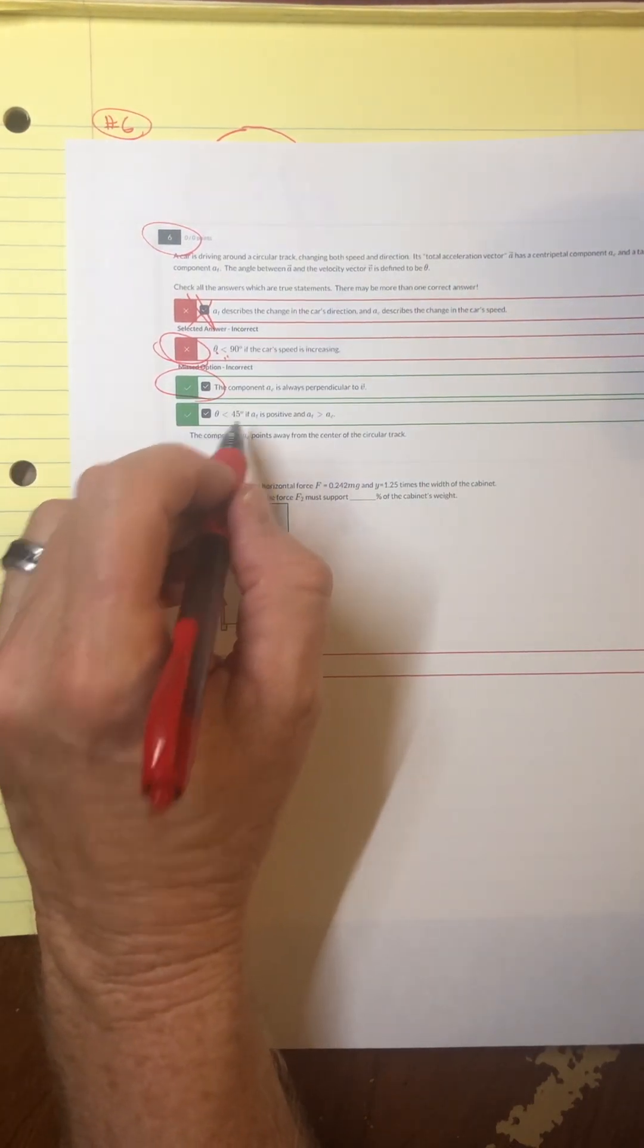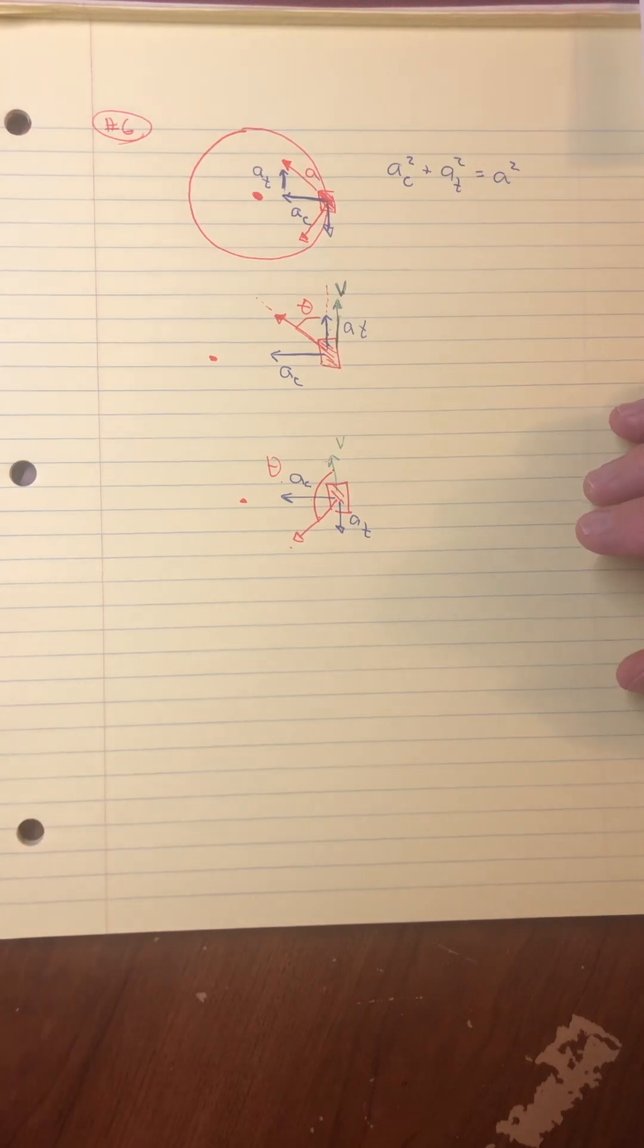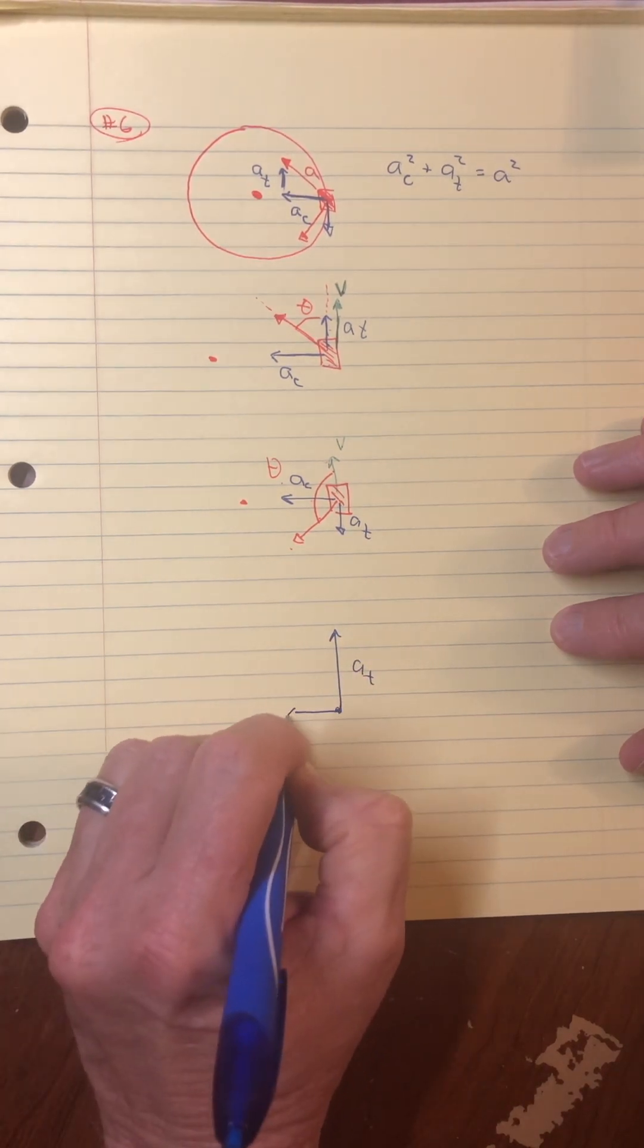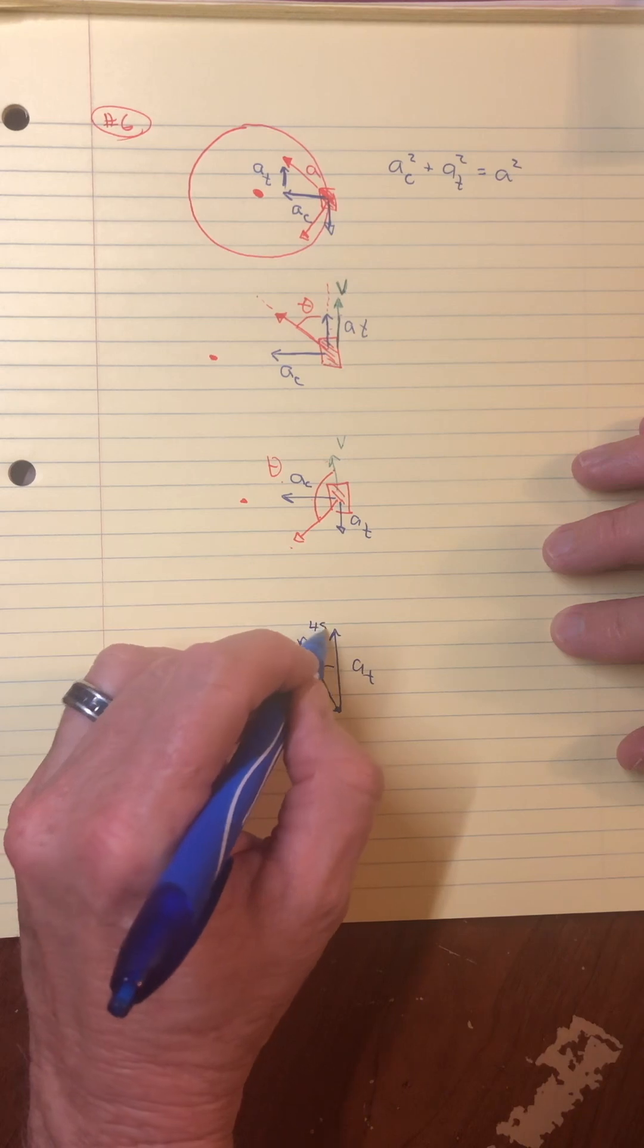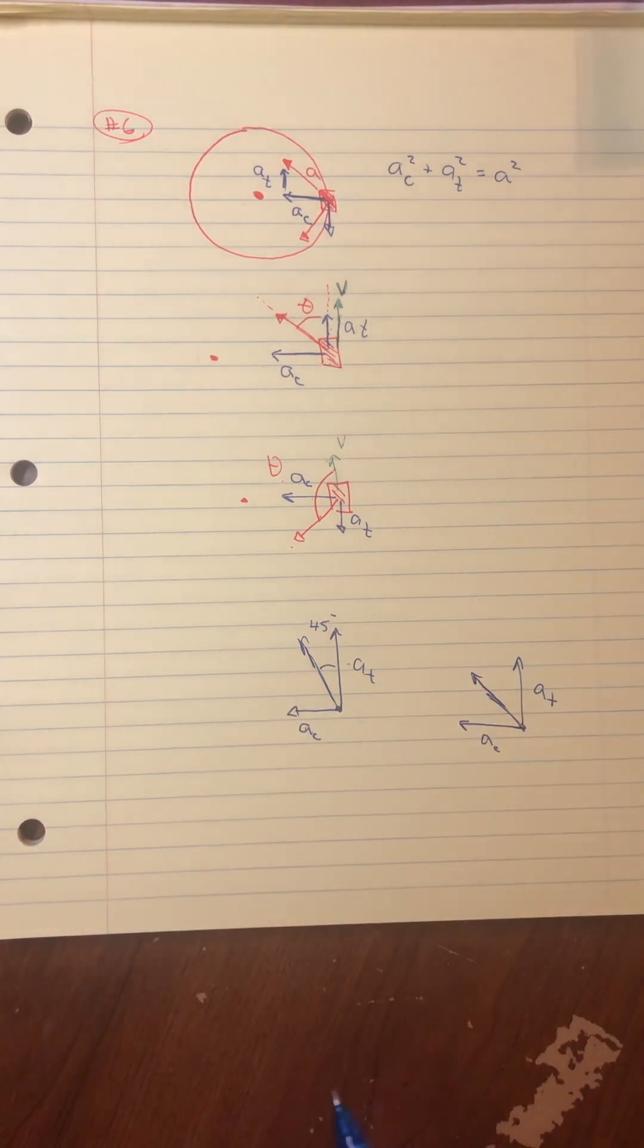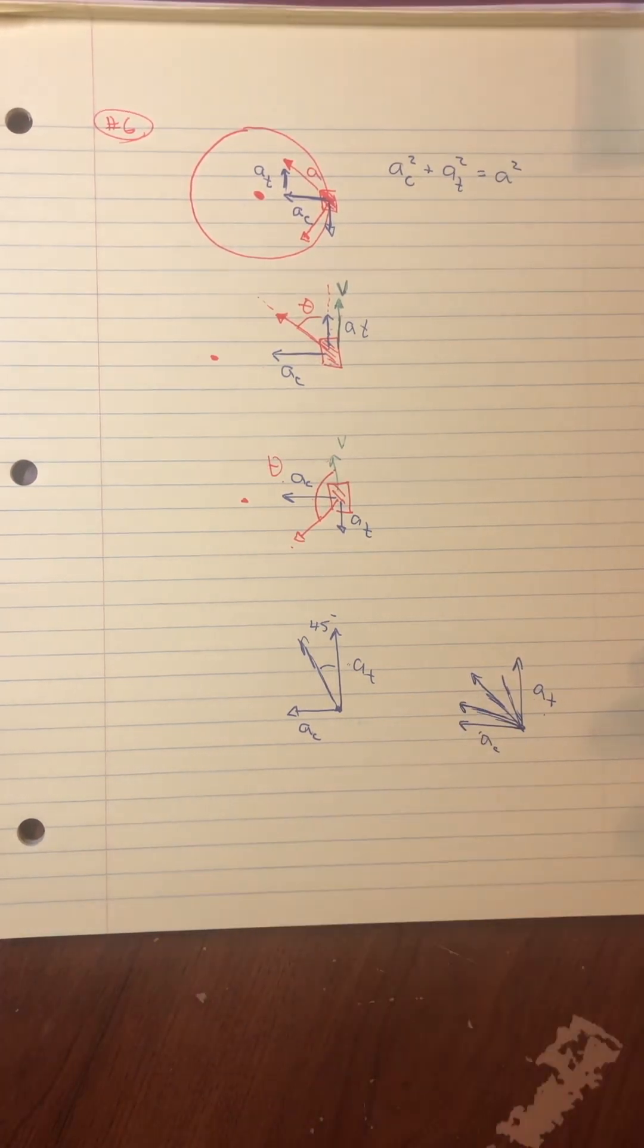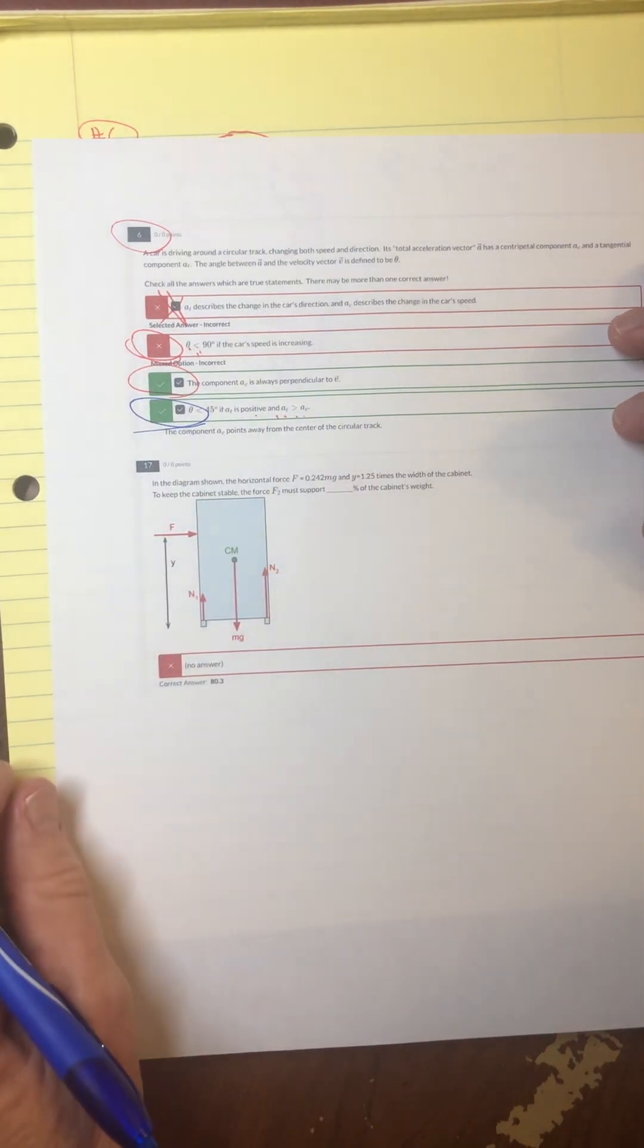Theta, less than 45 degrees, if the tangential is positive and tangential is greater than the acceleration. I think so. Let me draw a picture. So if I had a tangential that was this direction and a centripetal, and I'll draw it kind of short because they say the tangential is greater, this would give me an angle right here that would be less than 45. In other words, when these two are the same size, so when the tangential is the same size as the centripetal, you would get 45, and you'd get less than 45 if this leg was bigger, and you would get more than 45 if this leg was bigger. But they said less than 45, so that one should be circled here.